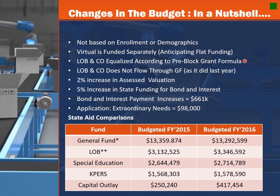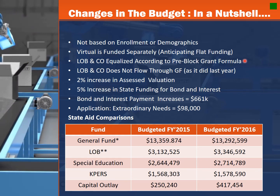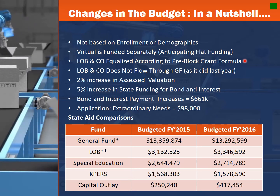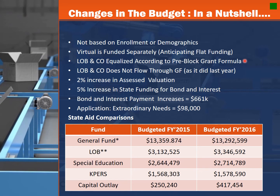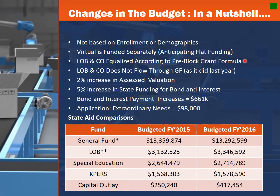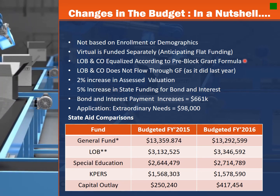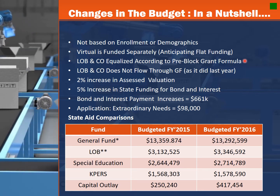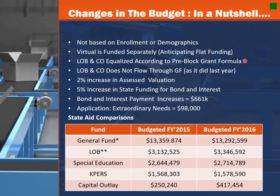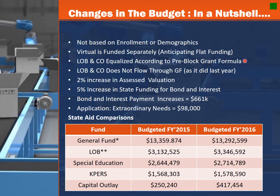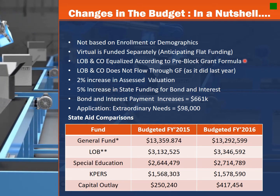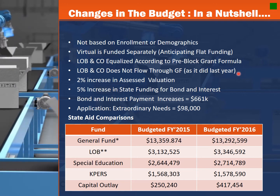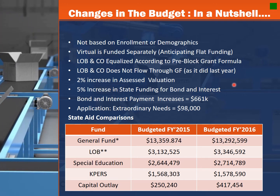Virtual funding is still separated out and funded based on the student's enrollment. The local option budget, otherwise known as the supplemental general fund, plus capital outlay is equalized according to the pre-block grant formula. So you will see, for example, that the LOB increases in 2016 compared to 2015 when you are looking at state aid. However, local effort decreases — in other words, less taxes — but the total dollars is not a substantial increase.